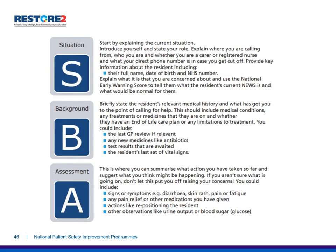S is for Situation. Start by explaining the current situation: introduce yourself and state your role, explain where you are calling from and whether you are a carer or a registered nurse, and give your direct phone number in case you get cut off. Provide key information about the resident including their full name, date of birth and NHS number. Explain what it is you are concerned about and use the National Early Warning Score to tell them what the resident's current NEWS is and what would be normal for them. For Background, briefly state the resident's relevant medical history, including medical conditions, any treatments or medicines they are on, whether they have an end of life care plan or any limitations to treatment, the last GP review if relevant, any new medicines like antibiotics, test results awaited, and the resident's last set of vital signs.